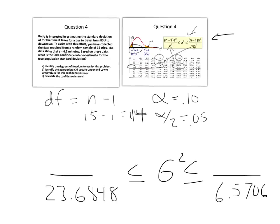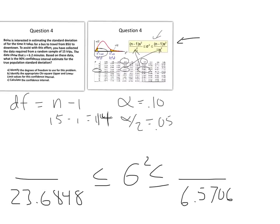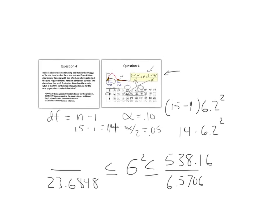Let's do that. Move this over a little bit. So we have our value for S is 6.2. We'll have to square that. And then degrees of freedom, of course, was 15 minus 1. So we're going to have 14 times 6.2 squared. And let's calculate that now. So 14 times 6.2 squared is 538.16. 538.16.